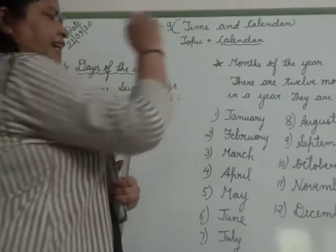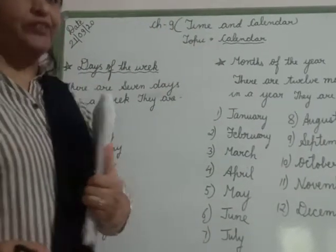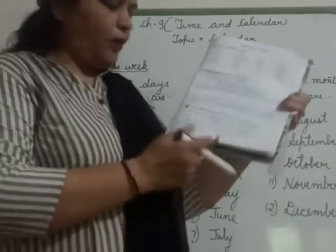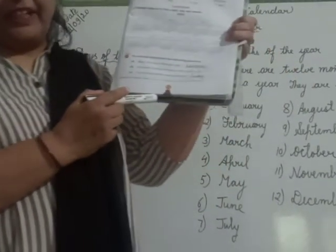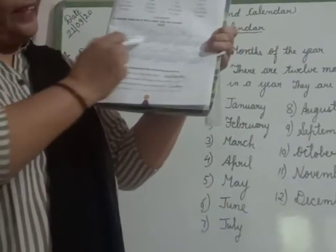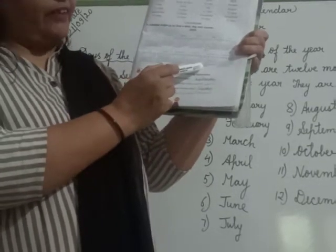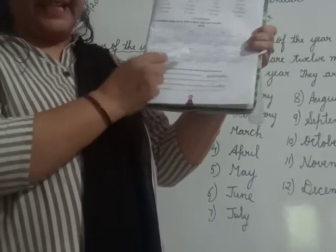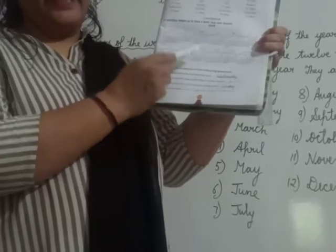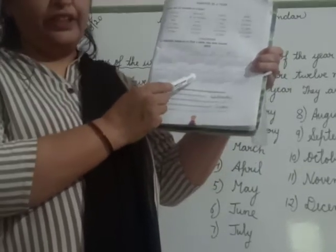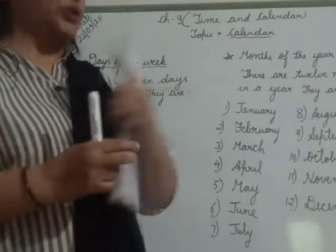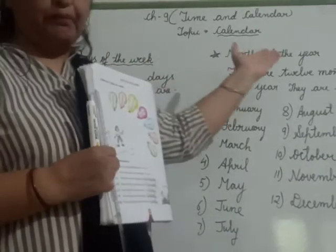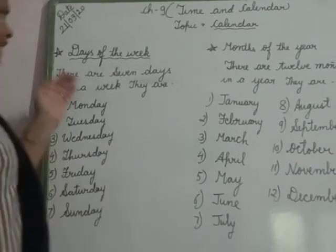And today's topic is Calendar. Children, everybody look at your book on page number 117. There is a calendar. In a calendar we will find dates, day and months of the year. So today we are discussing about days and months of the year. So let's start.